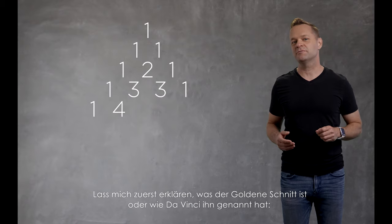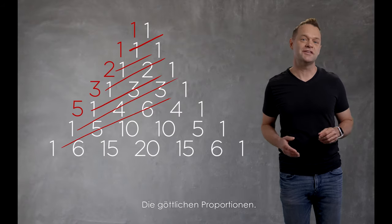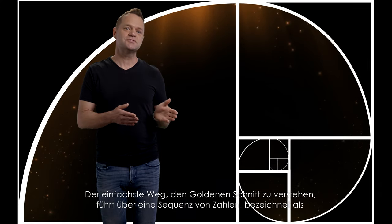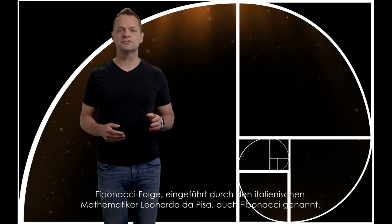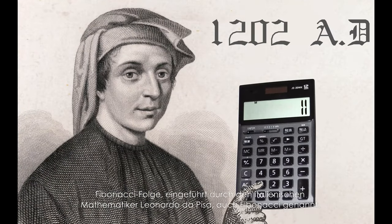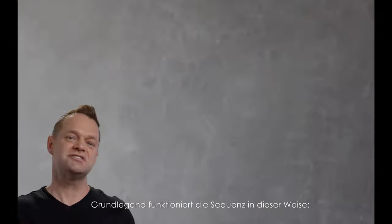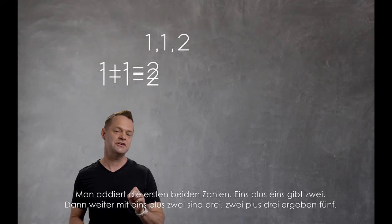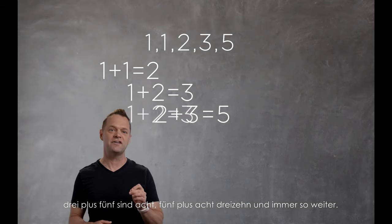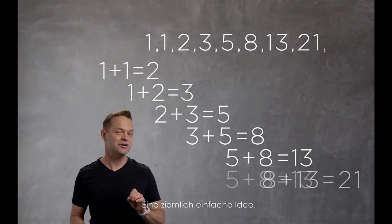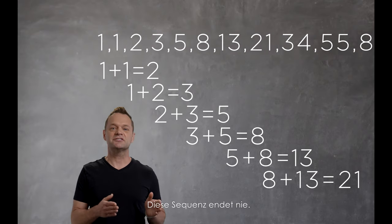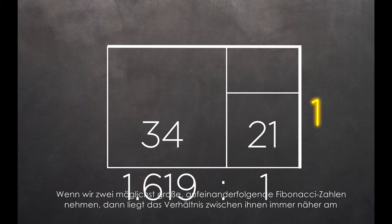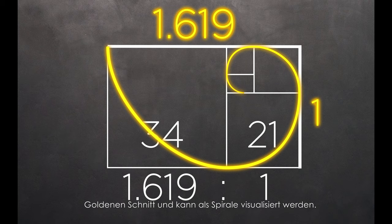Let me explain what the golden ratio is, or as da Vinci would have called it, the divine proportions. The easiest way to understand it is through the Fibonacci sequence, introduced in the modern world by Italian mathematician Leonardo of Pisa. The sequence goes like this: you add the first two numbers — 1 plus 1 equals 2, then 3 plus 2 gives you 5, then 5 plus 8 gives you 13, and so on. The sequence literally never ends. When we take any two successive Fibonacci numbers, the ratio is very close to the golden ratio and can be visualized as a spiral.